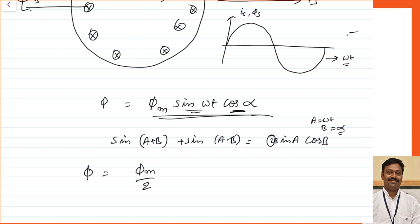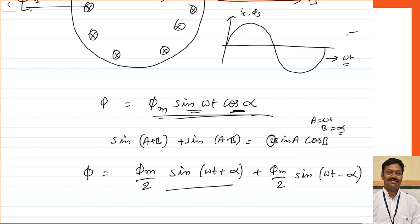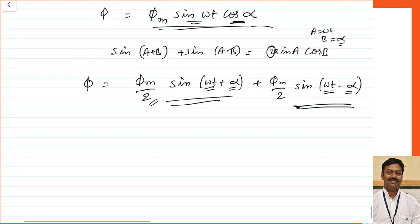So I can write this as (phi_max/2)·sin(ωt + α) plus (phi_max/2)·sin(ωt − α) — the combination of two waves. The original flux wave can be written as the combination of two waves: one rotating as (ωt + α) and the second as (ωt − α). This is the equation of a rotating magnetic field with magnitude equal to phi_max/2, similar to the three-phase rotating magnetic field equation.